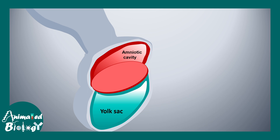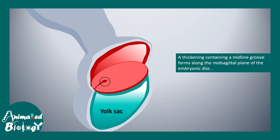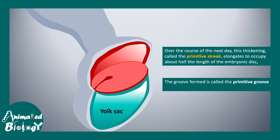Let's look at the embryo in 3D — we can see it hanging in the chorionic cavity, with the amniotic cavity and the yolk sac. At this point of time, at the caudal end of the embryo, a primitive streak forms. This is a thickening which contains a midline groove, and it forms the midsagittal plane of the embryonic disc. Over the course of the next day, this thickening — known as the primitive streak — elongates and occupies almost half the span of the embryonic disc, forming the primitive groove.